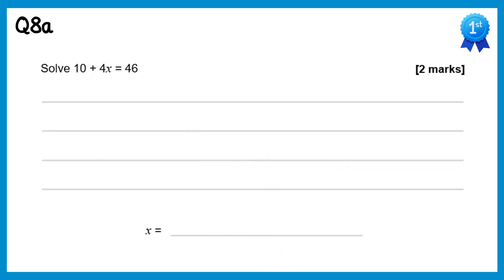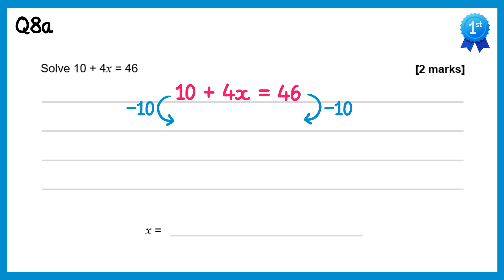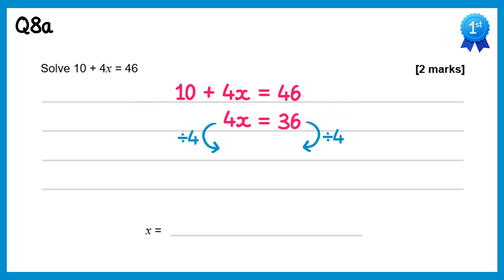For this question we need to solve an equation. Start by taking away 10 from both sides: 4x + 10 − 10 leaves 4x, and 46 − 10 = 36. Now divide both sides by 4: 4x ÷ 4 = x, and 36 ÷ 4 = 9. So x = 9.